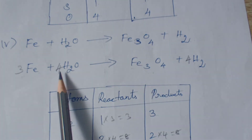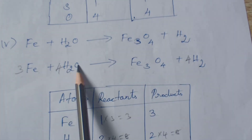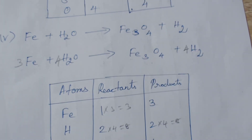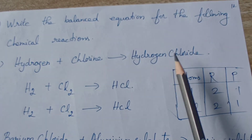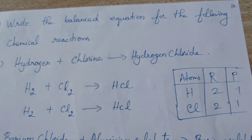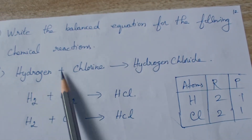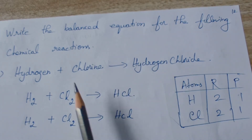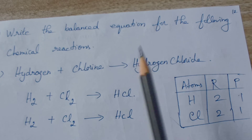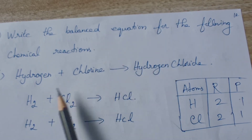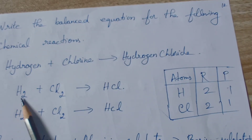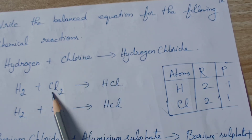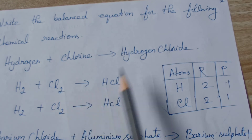Verify: 3 Fe = 3 Fe; 8 H = 8 H; 4 O = 4 O. The equation is balanced. We will see a few more examples today and continue with other questions tomorrow. The question is: write the balanced equation for the following chemical reactions. First: hydrogen plus chlorine gives hydrogen chloride.